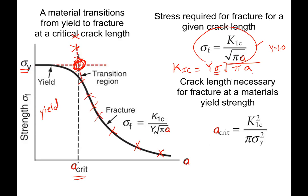Rearranging our fracture toughness equation, we can solve for the critical crack length. It's the plane strain mode one fracture toughness K1c squared over pi times the yield strength squared — and that gives us this critical point on the plot.